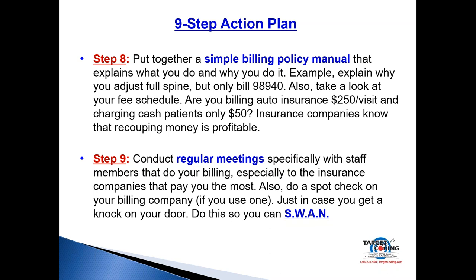Step eight: put together a simple billing and coding policy manual explaining what you do and why. For example, some doctors adjust full spine — a patient comes in with only neck pain but you adjust thoracics, lumbars, pelvis, and knee. Your notes show all of that but you only bill 98940. That could look like down-coding to a health plan. You need a policy explaining why you do that. Step nine: conduct regular meetings with your billing staff, document them, and keep a log — especially about the insurance companies that pay you the most.